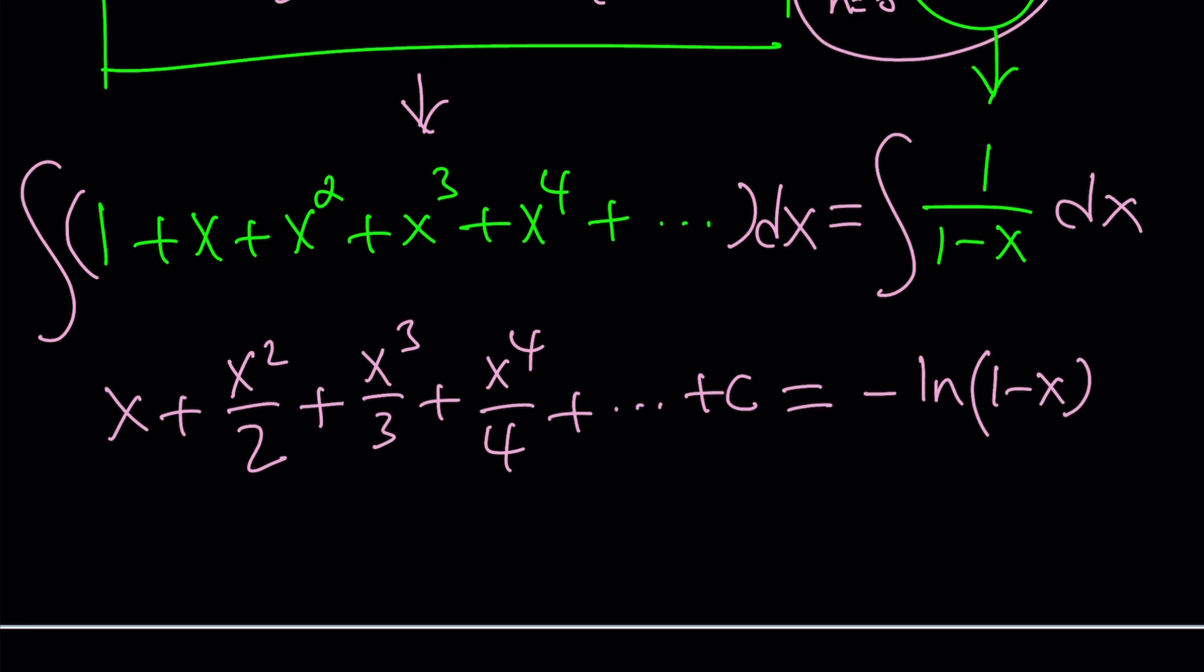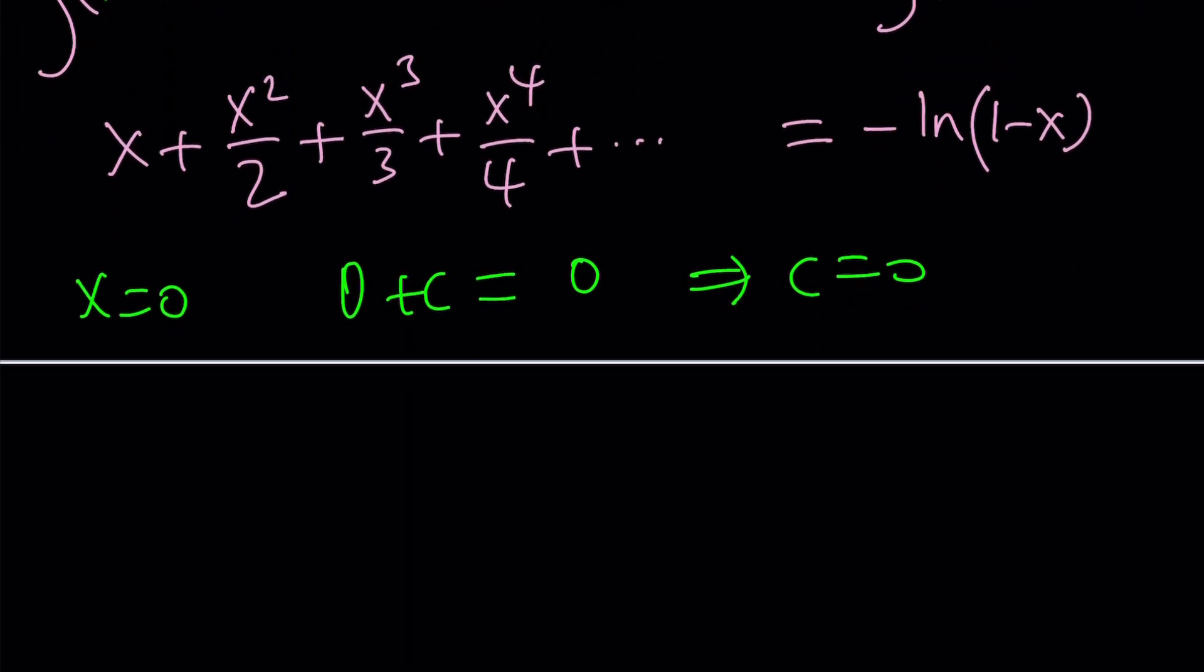If you replace x with 0 on both sides, left-hand side becomes 0 plus c, the right-hand side becomes 0. So from here, c is 0. I don't need c. Go ahead and erase it. Make sense? Cool.